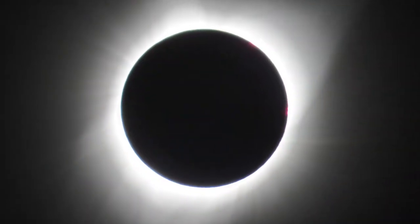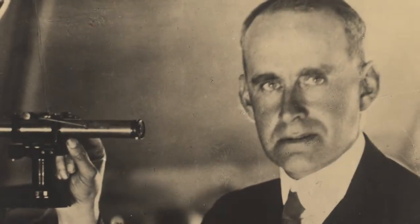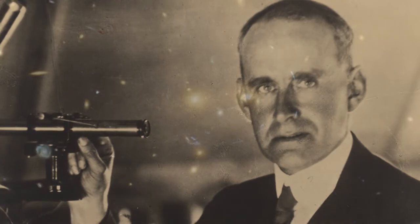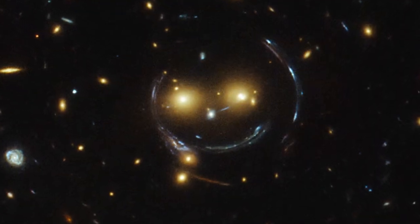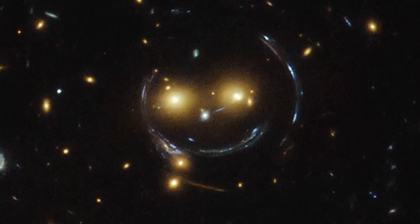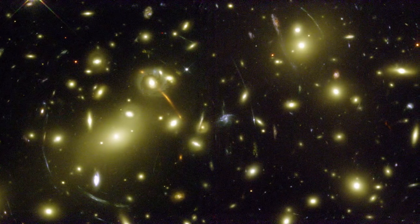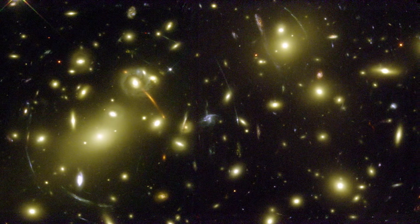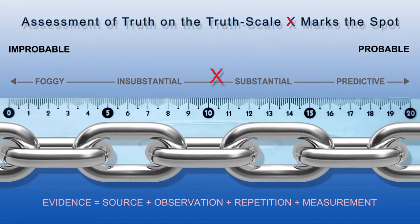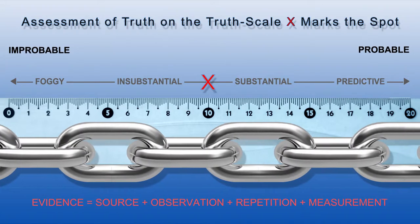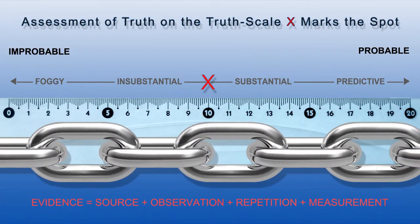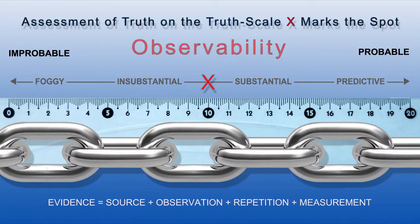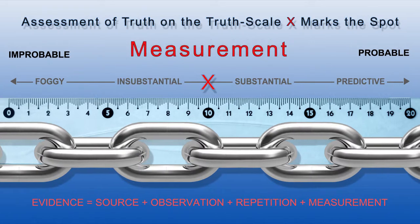An observation was finally made that did indeed verify his forecast in 1919, during a total solar eclipse. Sir Arthur Eddington performed the first successful experimental test of Albert Einstein's truth that light will bend due to gravitational effects. Then, after this initial observation, every other has verified that light does indeed bend due to gravitational effects. In the end, Einstein's great truth took on all three elements worthy of a high position on our truth scale: observability, repeatability, and measurement.